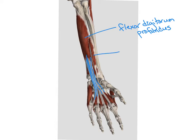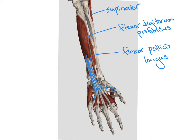We also see our flexor pollicis longus again. Remember, that would be deep to our flexor pollicis brevis when we get down into the hand. Up at the top, we can also see our supinator, which is our prime muscle of supination. And we can see the first, second, third, and fourth lumbricals in the hand.